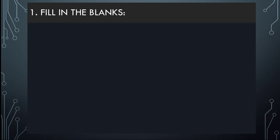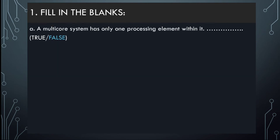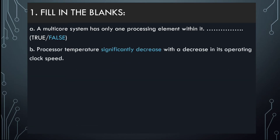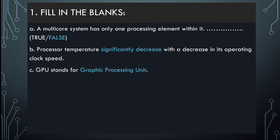I am not going to read all the questions line by line — you can see from the screen. First: a multi-core system has only one processing element — so this is definitely false. Multi-core means multiple processors or multiple cores. You can see the answers displayed in blue color on screen.